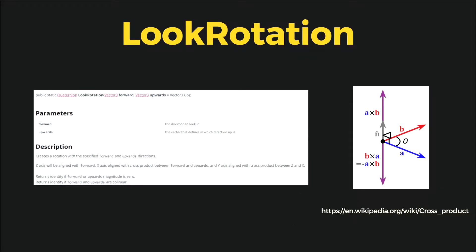So LookRotation takes two parameters, Vector3 forward and predefined Vector3 upwards that is equal to Vector3 up. The result of this is a rotation that aligns z-axis with the first parameter, so forward, and x-axis is aligned to the cross product between two parameters, so forward and upwards.